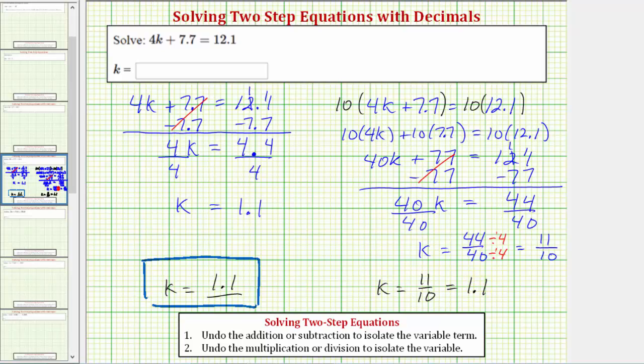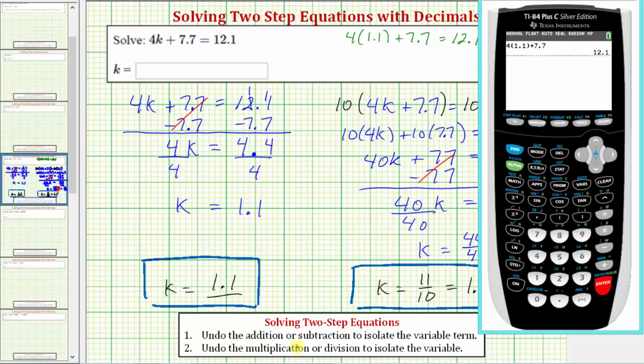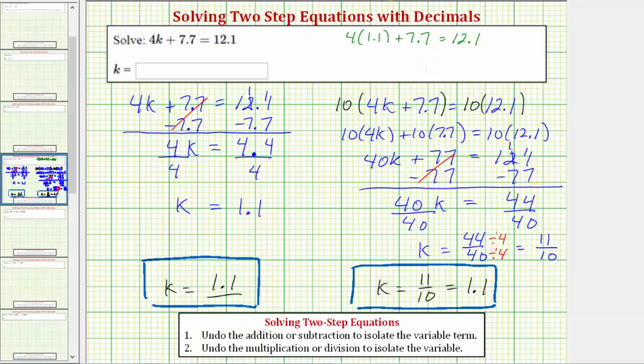Of course we get the same solution using either method. But before we go, let's check our solution by substituting 1.1 for k into the original equation to make sure it satisfies the equation. Performing this substitution, we would have 4 times 1.1 plus 7.7 equals 12.1. Let's evaluate the left side on the calculator. Notice how 4 times 1.1 plus 7.7 is 12.1, verifying our solution is correct. The left side equals 12.1, the right side equals 12.1. And because this is true, our solution is correct.